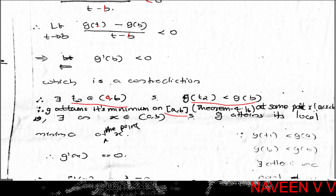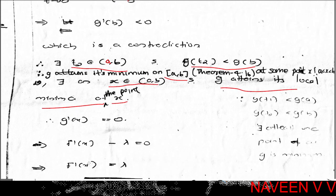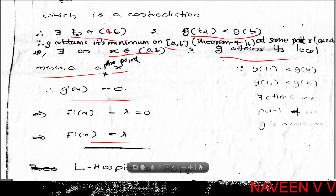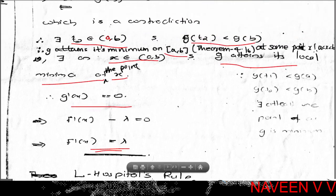At the interior minimum point x, we have g'(x) = 0, that is f'(x) - λ = 0, so f'(x) = λ. This completes the proof of Theorem 5.12: for any λ strictly between f'(a) and f'(b), there exists x in (a, b) with f'(x) = λ.